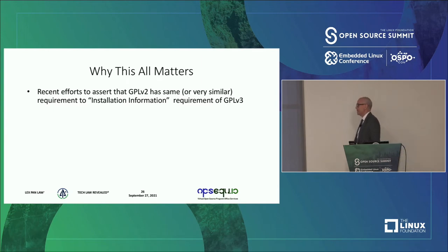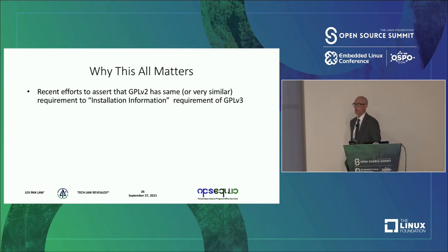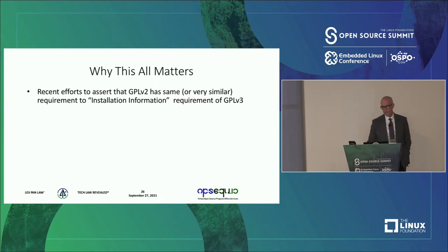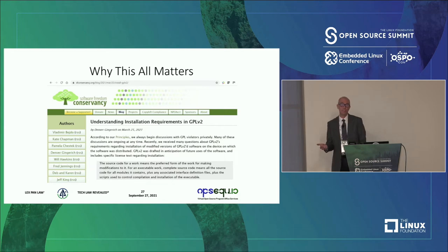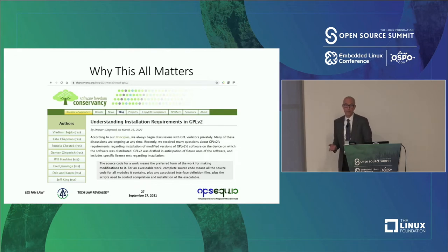Very recently — within the past year or two — there has been a debate about whether what I just presented is a correct interpretation. Is it correct that one can install GPL v2 code on a device and not provide the required information so the end user can modify and reinstall it? This debate has been going on between two entities: the Software Freedom Conservancy, who have been involved in a lot of different initiatives about open and free software compliance and in some cases have done enforcement of free software licenses.